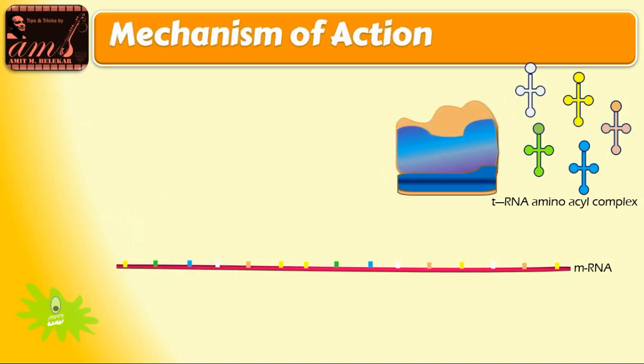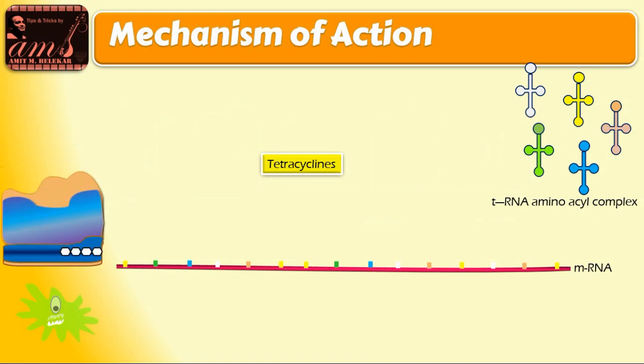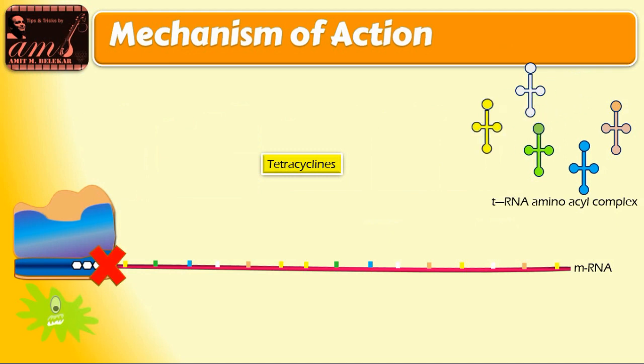Now, we have to deal with the mechanism of action of tetracycline. Tetracyclines have affinity for 30S subunit of bacterial ribosomes and bind with it. Thus, it interferes with initial complex formation between amino acid tRNA and mRNA. As a result, peptide chain fails to grow.